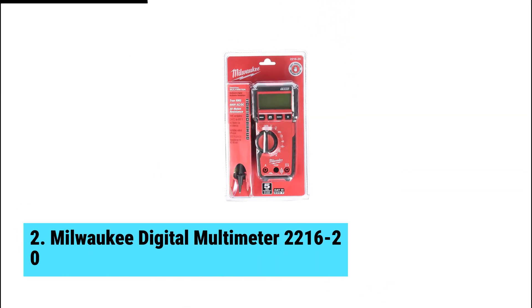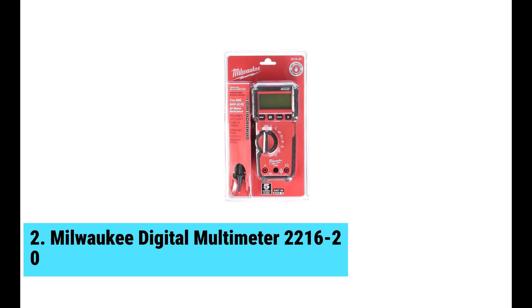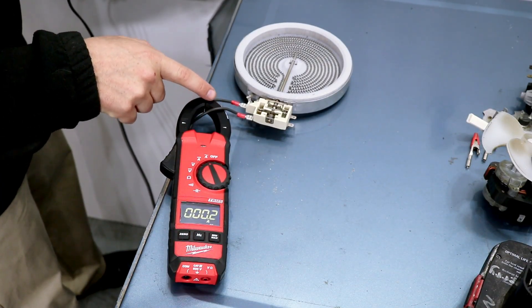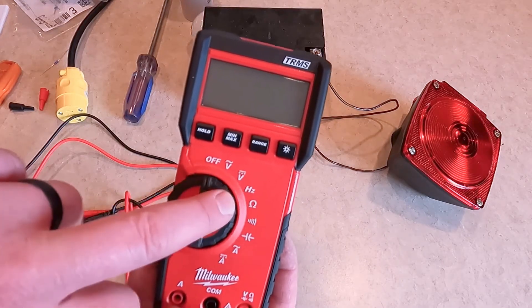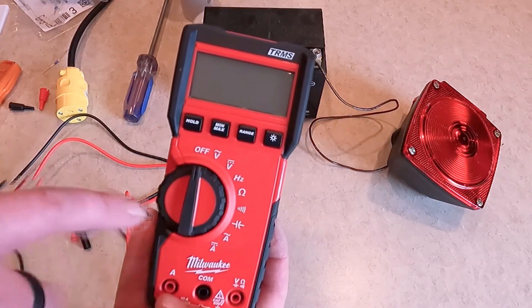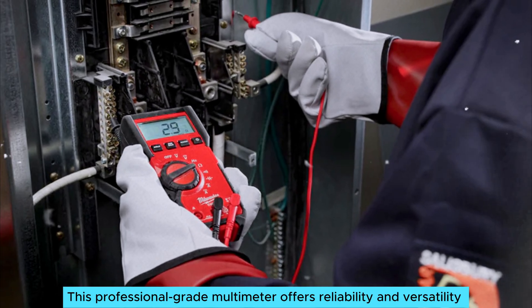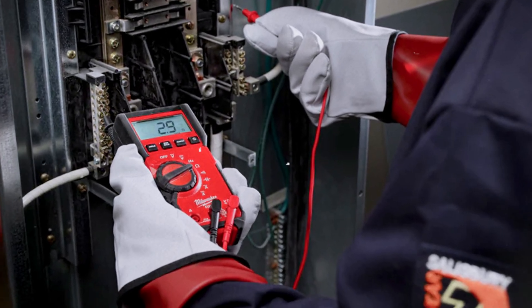At number 2, we have Milwaukee Digital Multimeter 2200-1620, the best professional-grade digital multimeter. Milwaukee Digital Multimeter 2200-1620 stands out in a crowded market. This professional-grade multimeter offers reliability and versatility that impresses even seasoned electricians.